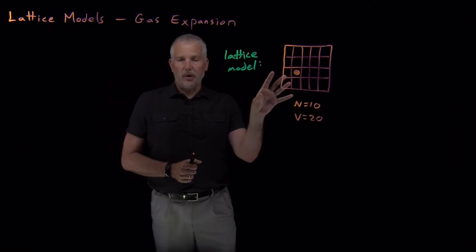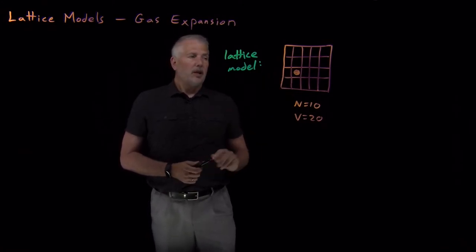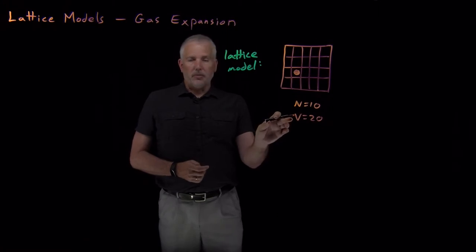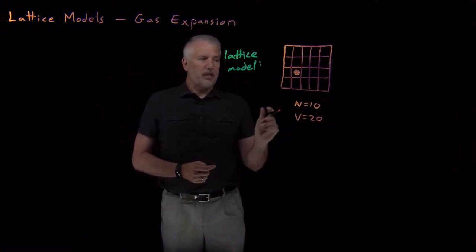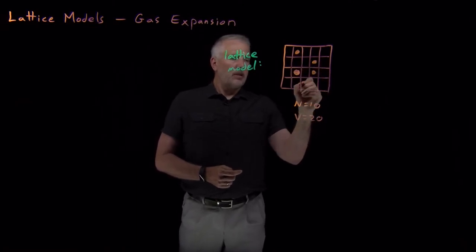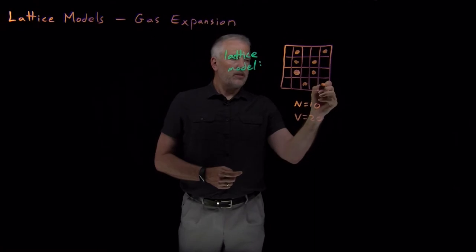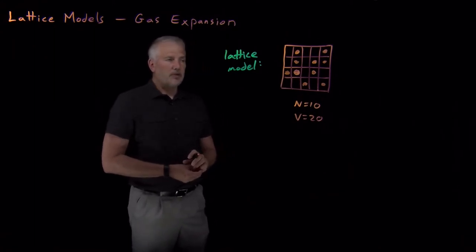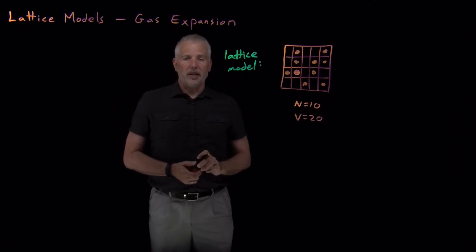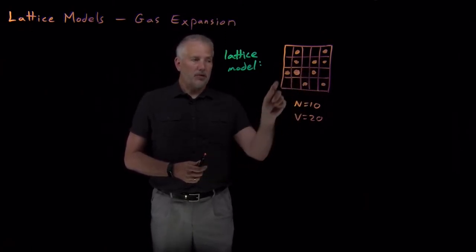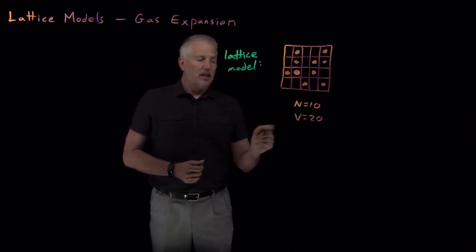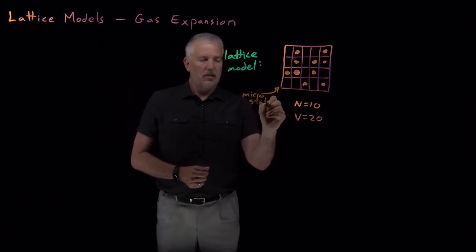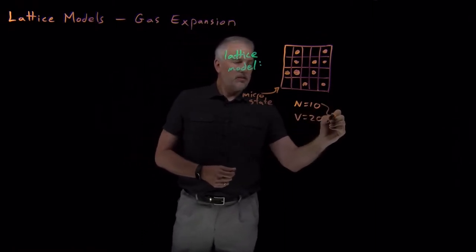This is not how gases behave in the real world — it's just a model, an approximation. In our simple example, we put 10 molecules into a large box containing 20 grid positions. What I've drawn here is one microstate: one specific way for the molecules to inhabit the box, telling you where every individual molecule is.